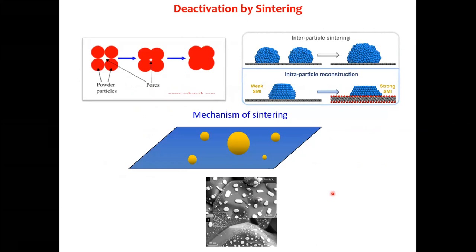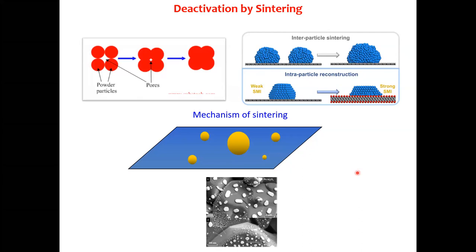There is also a possibility of catalyst deactivation called the sintering effect. Normally, if metal particles are very close to each other, they start coming together — small pores form between them, and finally those pores disappear as a bigger particle forms. This is inter-particle sintering: two metal particles move during the reaction, come together, and form a bigger particle, changing the selectivity and performance of the catalyst.